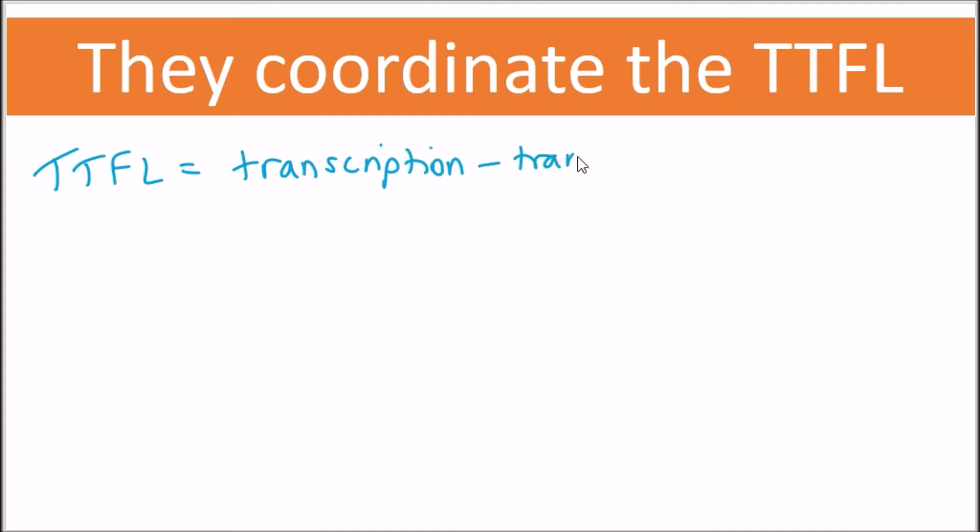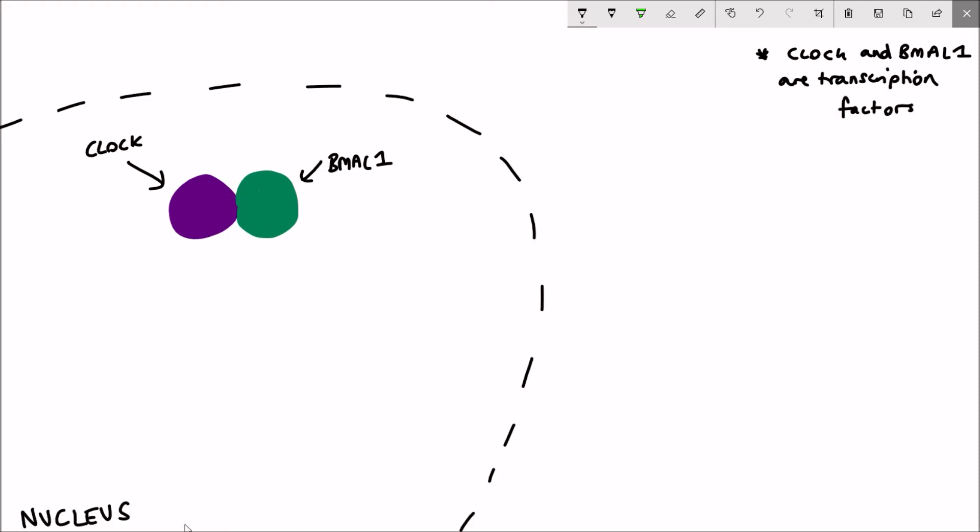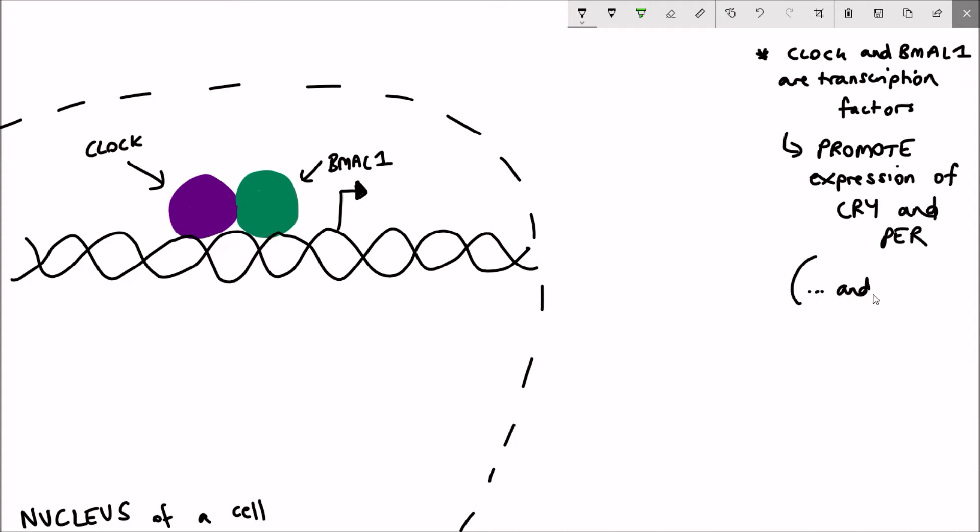And this is referred to as the transcription translation feedback loop. So how does this work then? CLOCK and BMAL1 are both transcription factors. So what this means is they can bind DNA and regulate the expression of different genes. So CLOCK and BMAL1, as I already said, they pair together and they go into the nucleus of a cell and they bind to DNA. And they upregulate the expression of a variety of different genes.